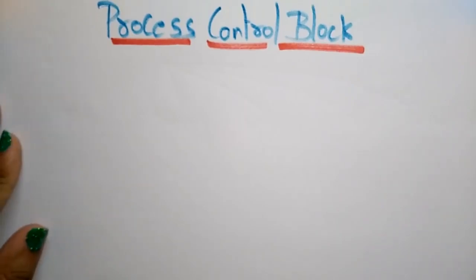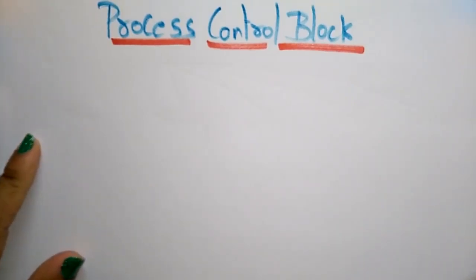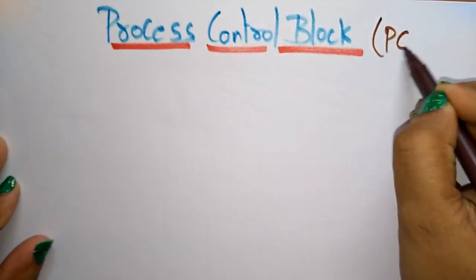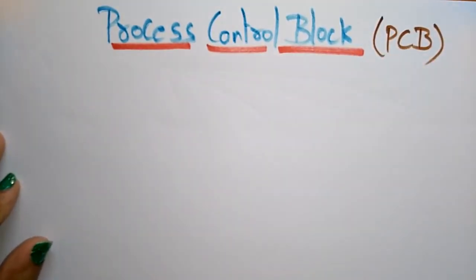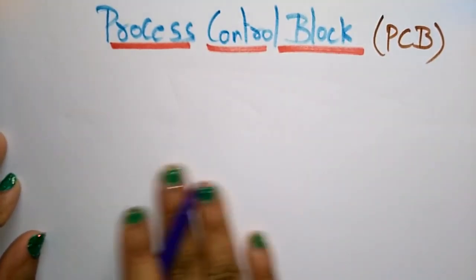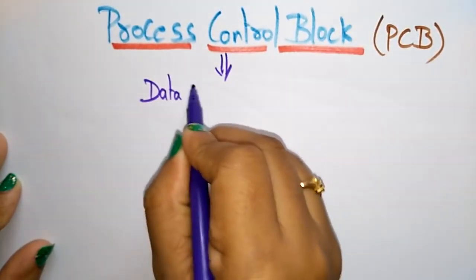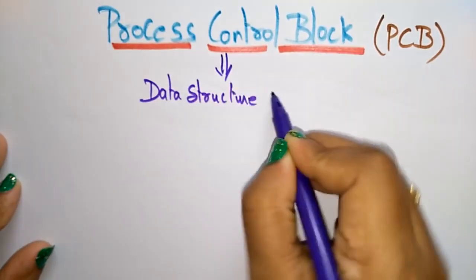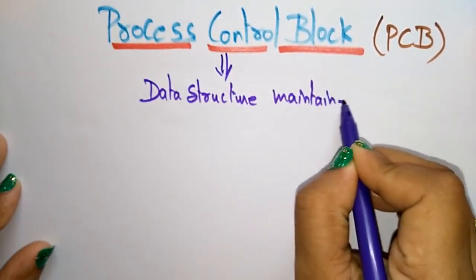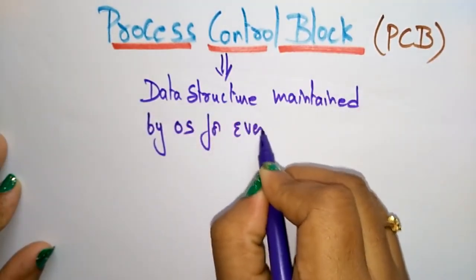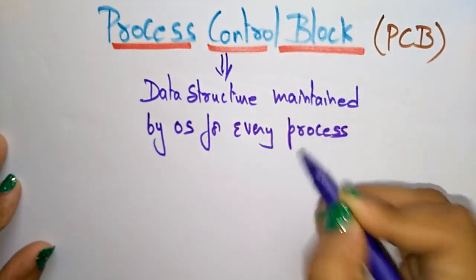Coming to the next topic, that is a Process Control Block. In the previous video I explained about the process states, the five states that are present in the process. Now let us see what is this Process Control Block PCB. This is a data structure maintained by the operating system for every process.